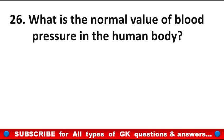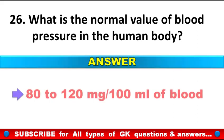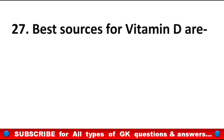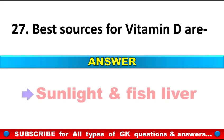What is the normal value of blood pressure in the human body? Answer: 80-120 mmHg per 100 ml of blood. Best sources for vitamin D are? Answer: Sunlight and fish liver.